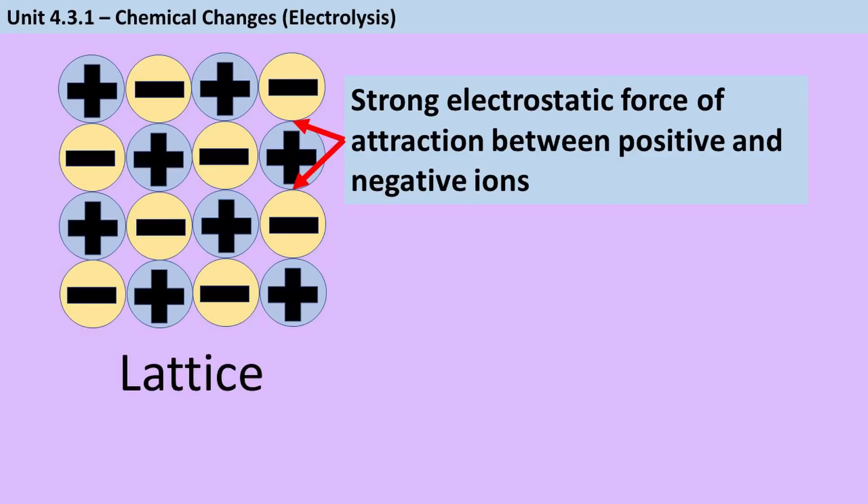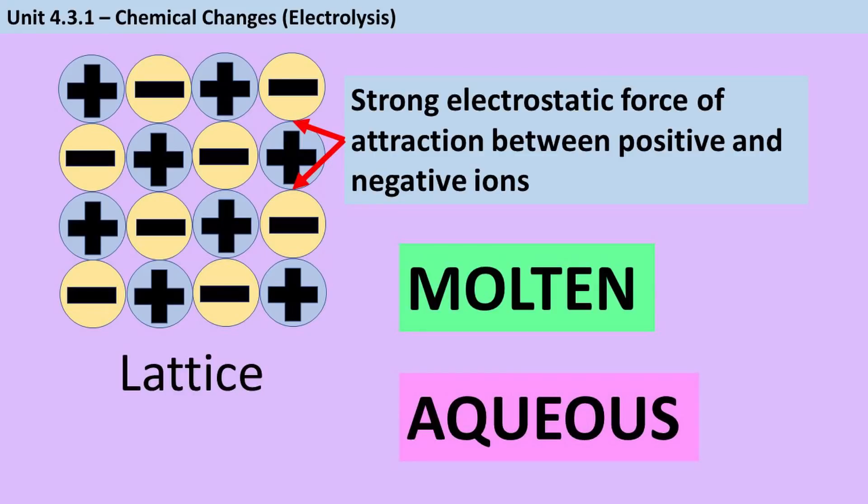Those ionic bonds are incredibly strong, so if we tried to carry out electrolysis on a solid ionic compound at room temperature, it wouldn't work because the ions wouldn't be free to move. In order for the ions to be able to move, so we can split them up, the lattice has to be broken apart.